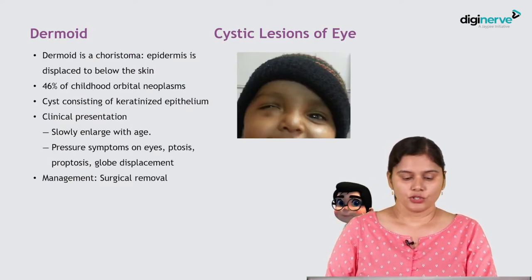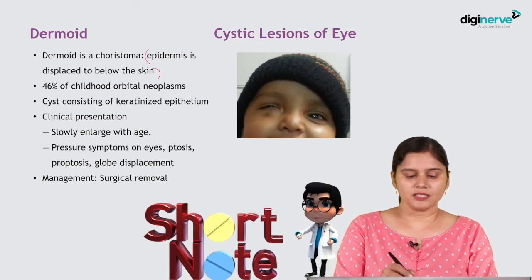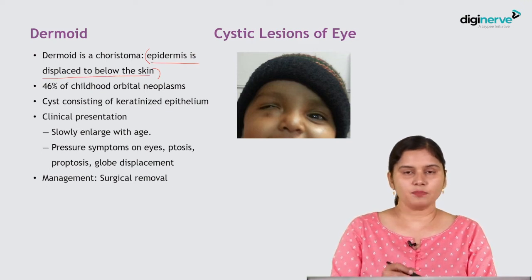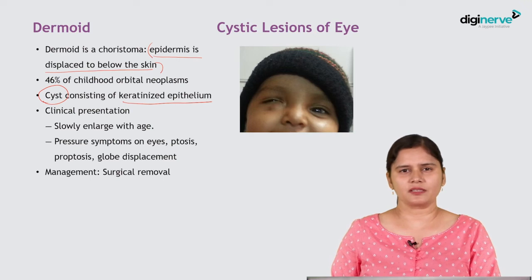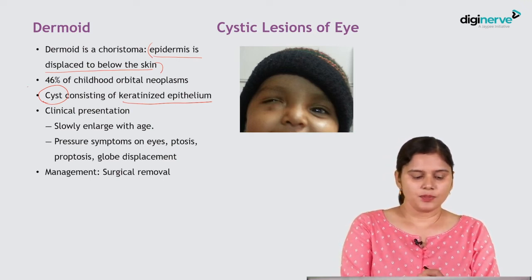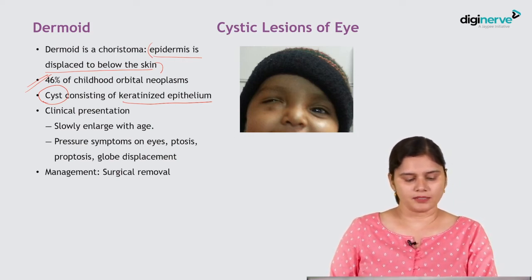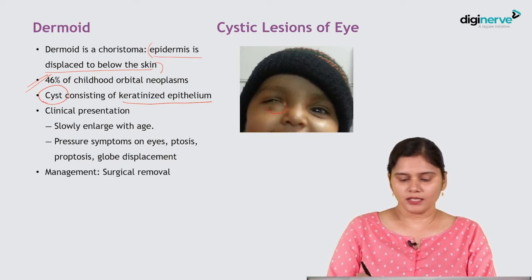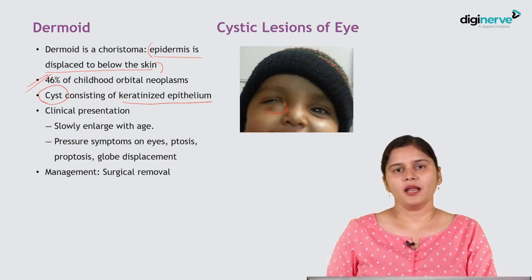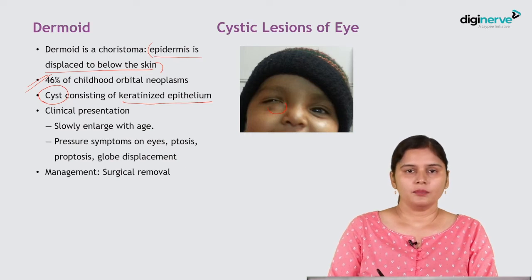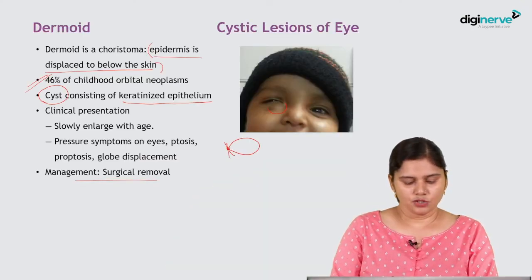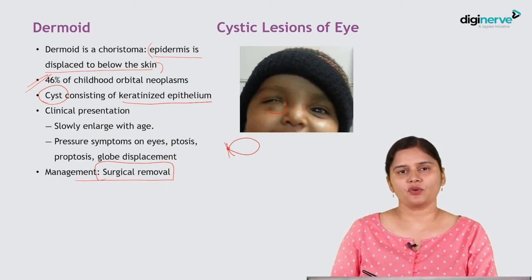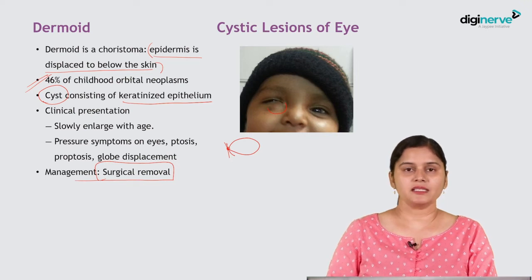Dermoid is a choristoma, meaning tissue is displaced into an abnormal position. Here, epidermis is displaced below the skin, forming a cyst containing keratinized epithelium, hair, sebaceous glands, and sebaceous secretions. It accounts for 46% of all childhood orbital neoplasms. Clinically, it is a slowly growing cyst present beneath the skin inside the orbit, usually attached where two bones of the orbit unite, and is fairly mobile otherwise. Management is complete surgical removal — you must not spill the contents inside the orbit as this causes intense granulomatous reaction.